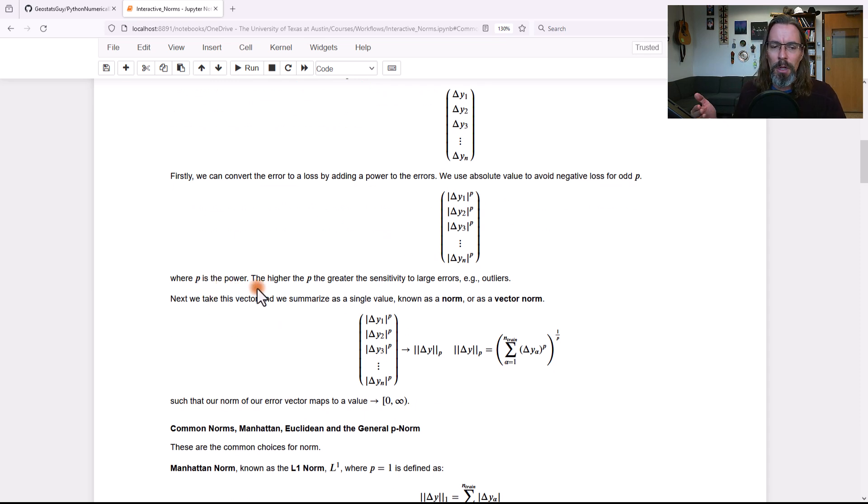Now, I hope you can see with this general representation, p is a power. If p is greater, we increase the sensitivity to larger and larger errors. If you have a very large error and you use a large p, it becomes a dominant component of loss. It becomes really important.